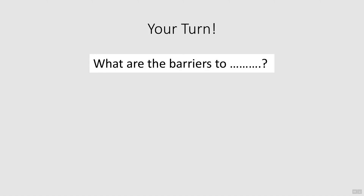Now it's your turn. Take the problem variable that you identified after the last video and finish this sentence, or adapt the sentence to fit your problem variable. Next, try to generate a list of 15 variables that are barriers to achieving the change in the pattern that you desire. Keep these 15 variables for the next activity.